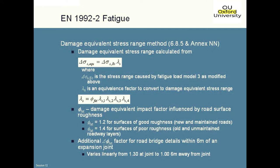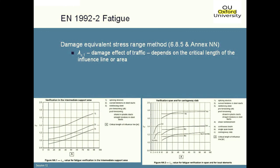There's a further impact factor similar to one that was in the old British code. If you're near to an expansion joint, obviously when you pop over it there can be a bit of a bump. So we have a factor of 1.3 for details actually at the expansion joint, dissipating down to a factor of 1.0 six metres away.